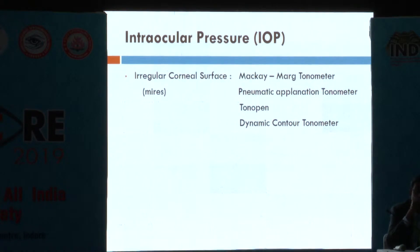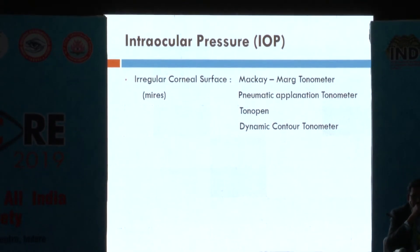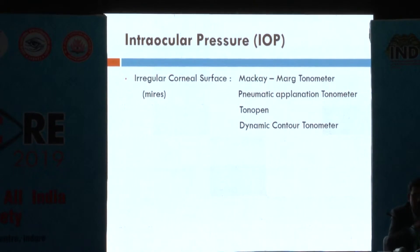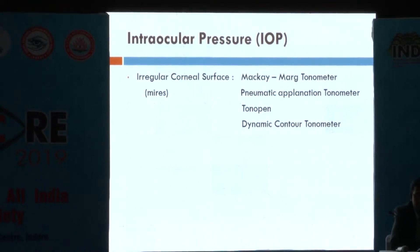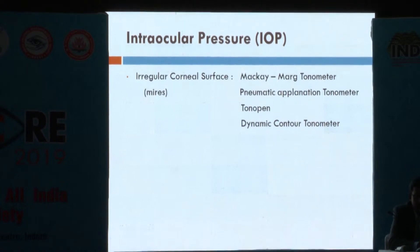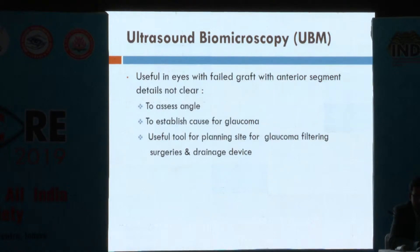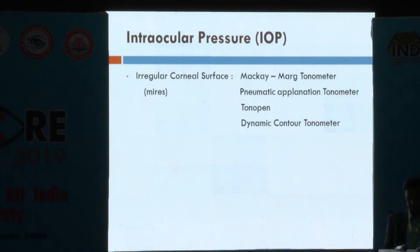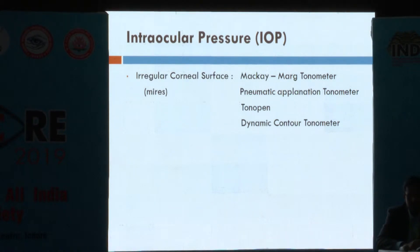Intraocular pressure measurement is the sole important factor that can detect post-PK glaucoma. In cases of irregular corneal surface, newer tonometers like the Mackay-Marg tonometer, pneumatic tonometer, Tono-Pen, and dynamic contour tonometer are some of the tonometers which can be used to measure pressures on an irregular corneal surface.